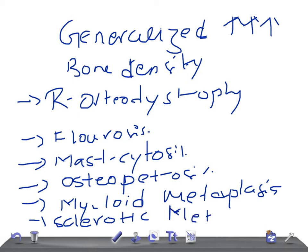So to summarize, the causes for generalized increased bone density are: renal osteodystrophy, fluorosis, mastocytosis, osteopetrosis (also known as marble bone disease), myeloid metaplasia, and sclerotic metastasis. Thank you so much for watching this video, take care.